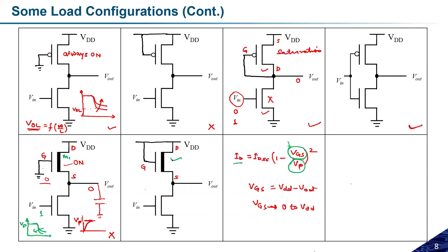Since this transistor is always in the on state: if Vin equals zero, the lower transistor is off and VDD is transferred to Vout. If Vin equals one, the lower transistor is on and it acts as a voltage divider. The output behavior depends on transistor sizing.